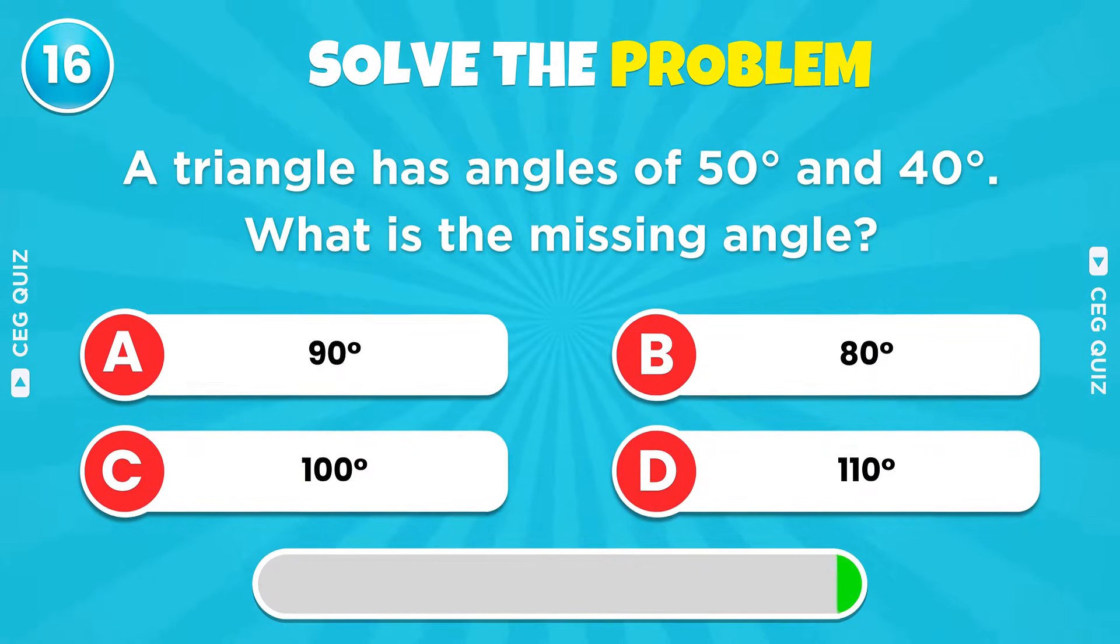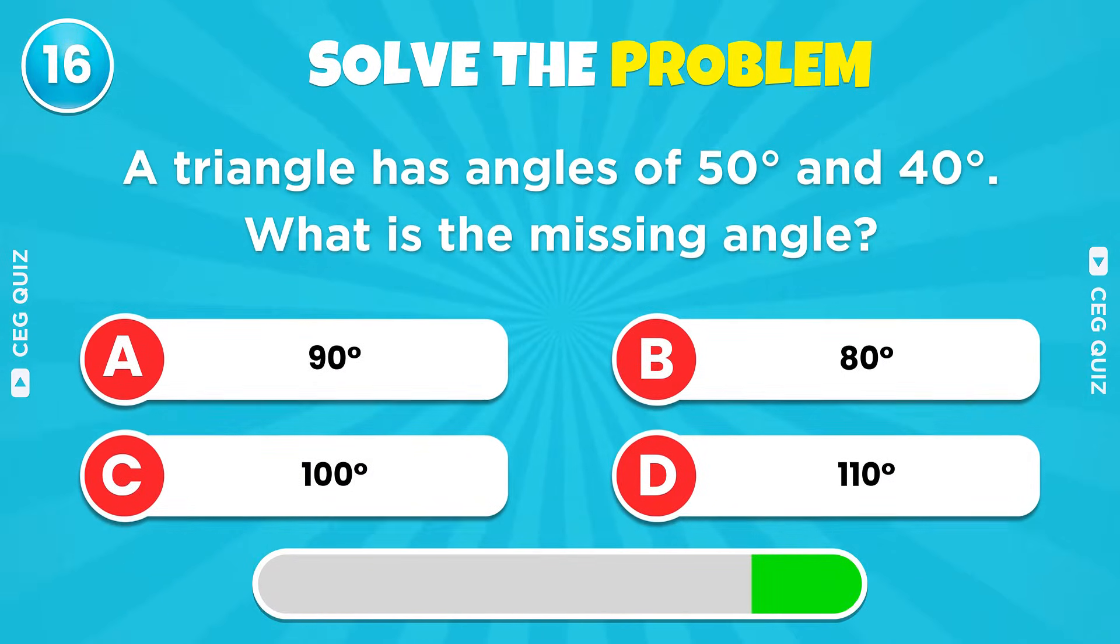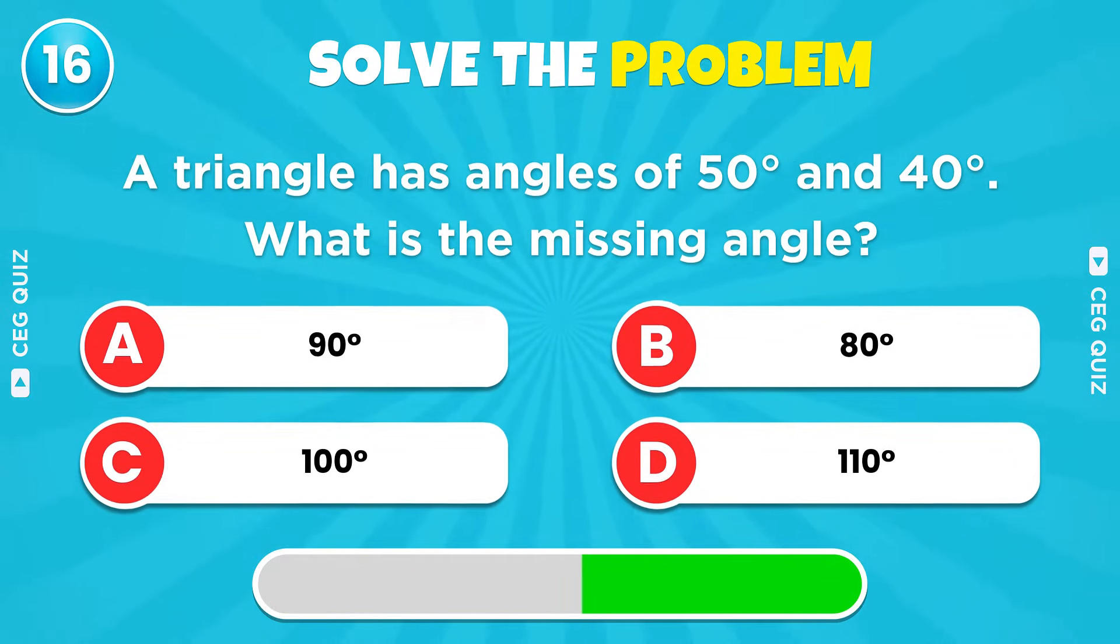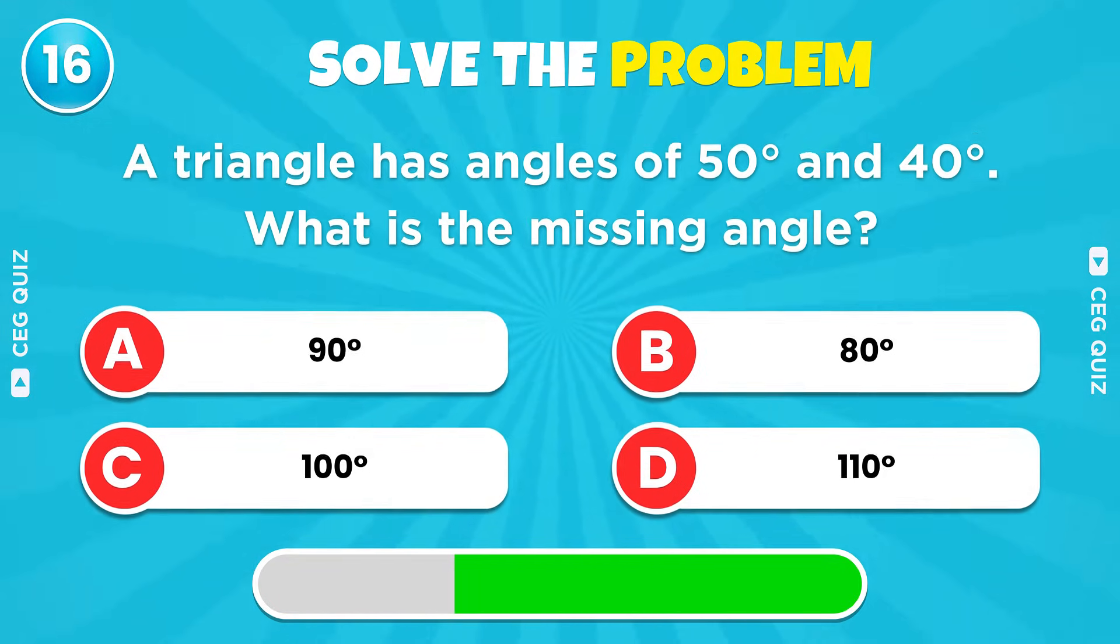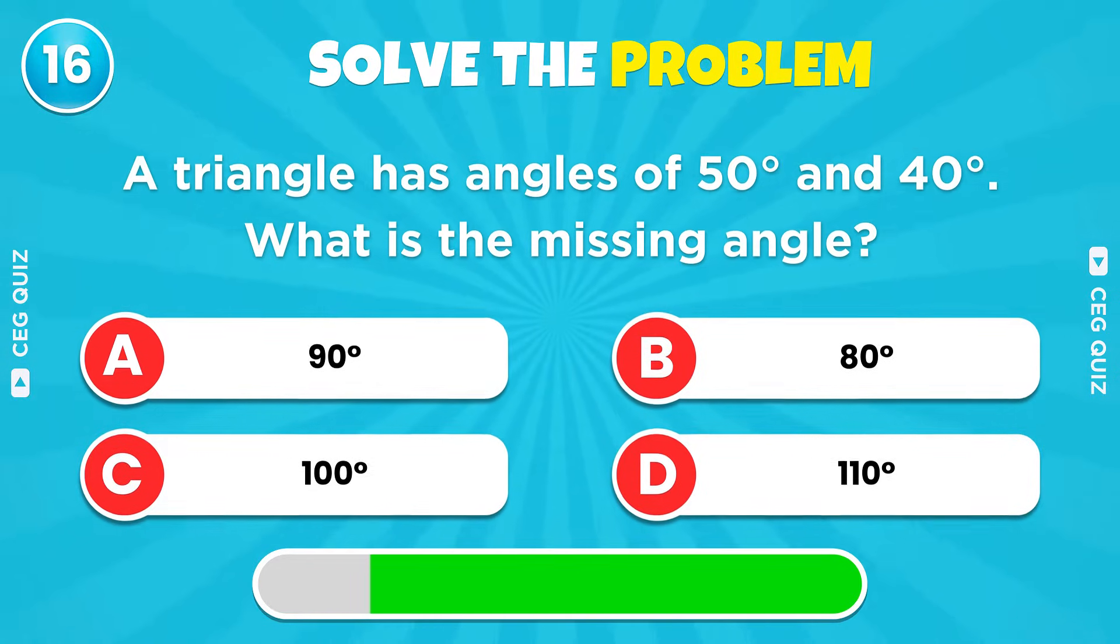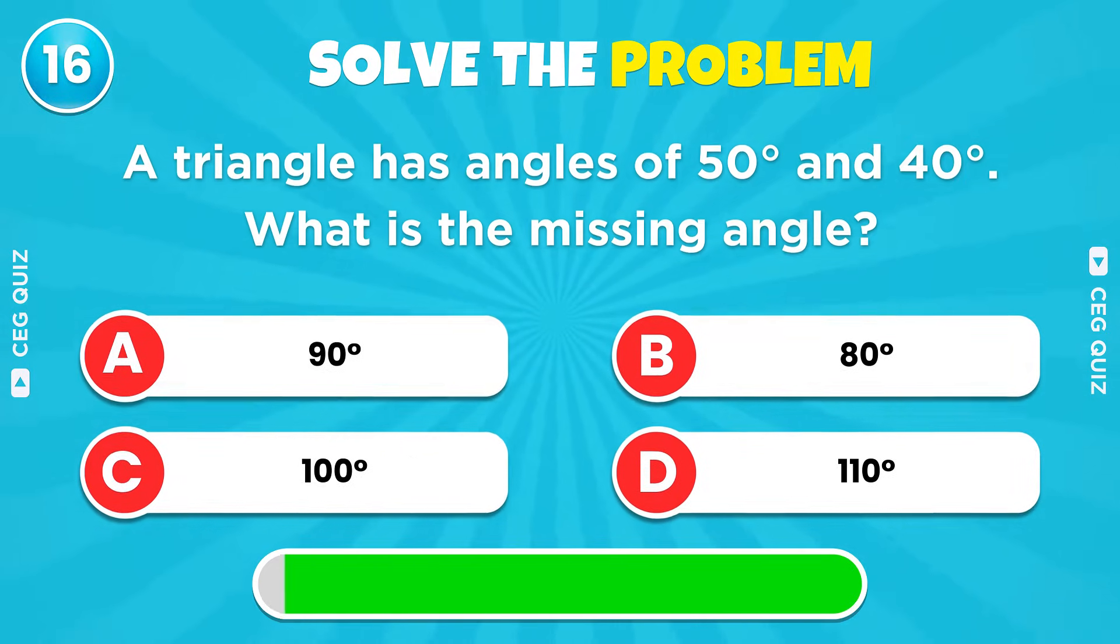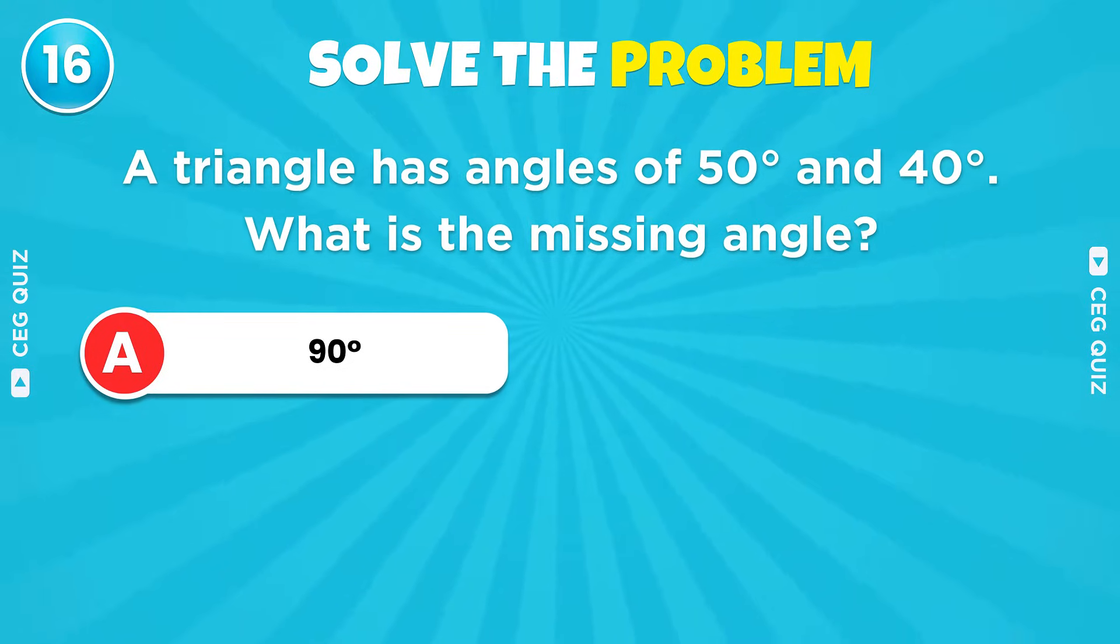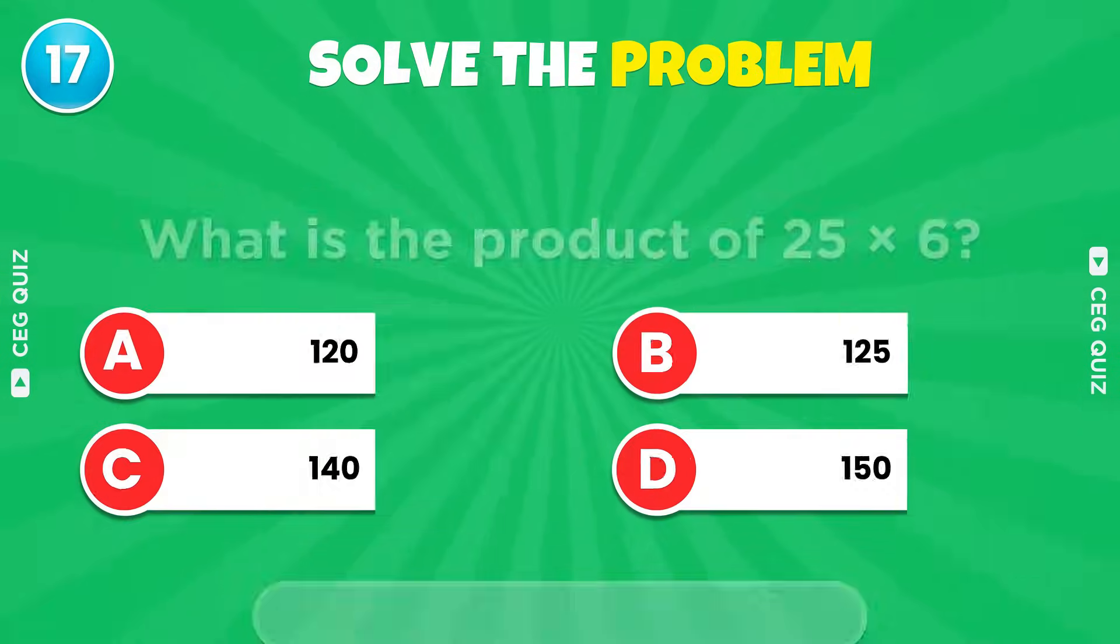A triangle has angles of 50 degrees and 40 degrees. What is the missing angle? 90 degrees.